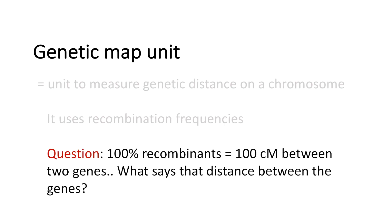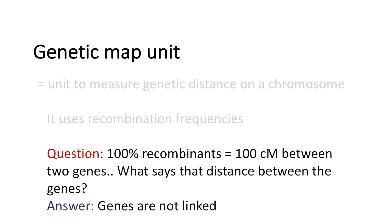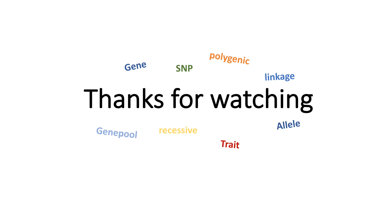In the end I have one question: in the case of 100% recombinants — meaning 100 centimorgans are between two genes — what does it say about the distance between the genes? You can pause the video here and think about it. The answer is: the genes are not linked. With this, I thank you for watching — I hope it was helpful, and feel free to ask questions in the comments.